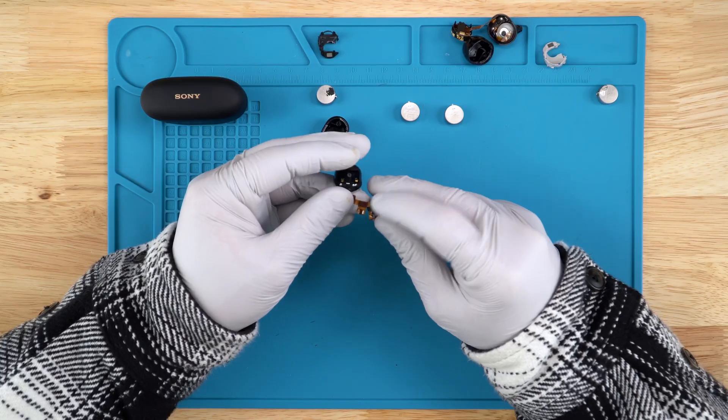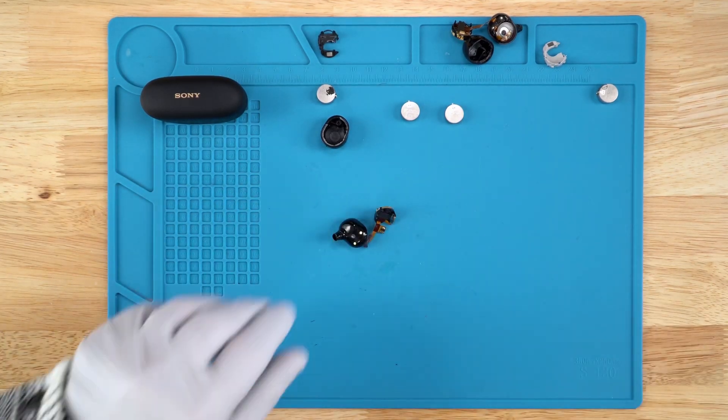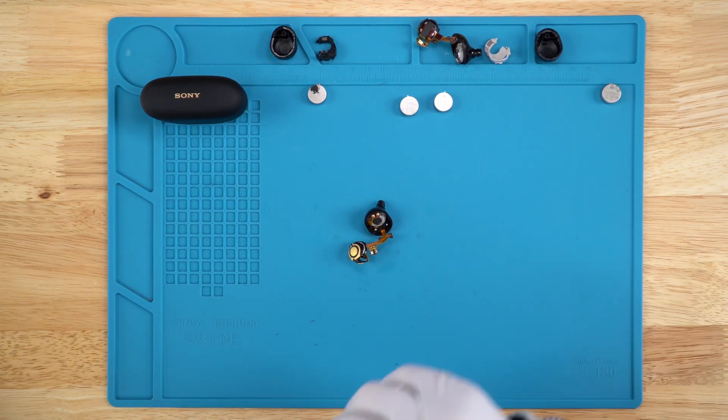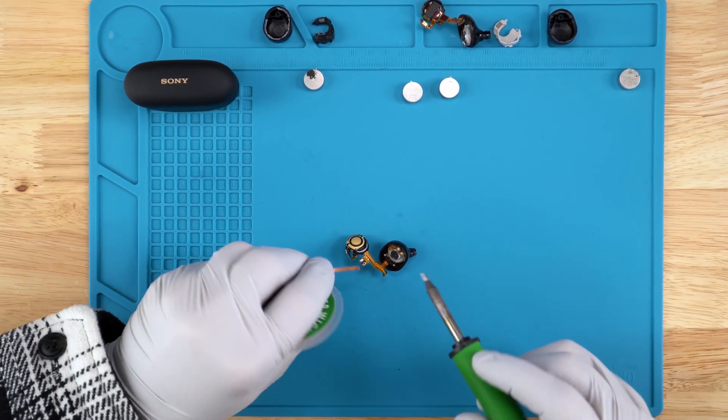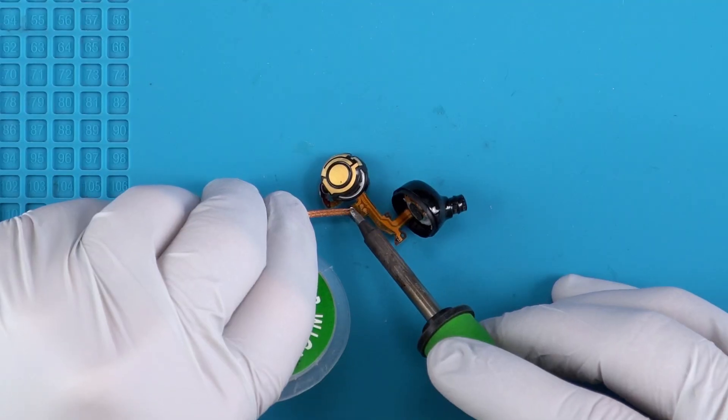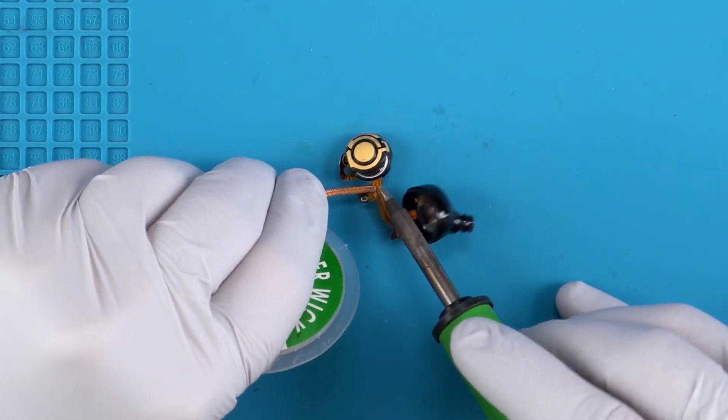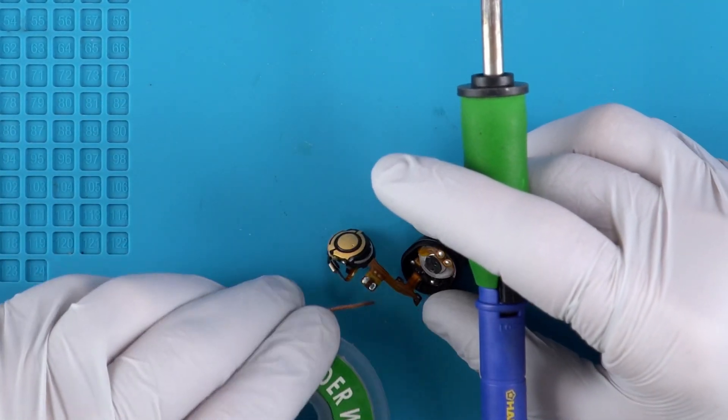Depending on how you want to unsolder that battery you can go ahead and do that. We'll go ahead and clean up that solder point. Again you could just solder the battery right in but we're going to go ahead and clean this up first. Again this is where helping hands can help you where nothing will be moving around.